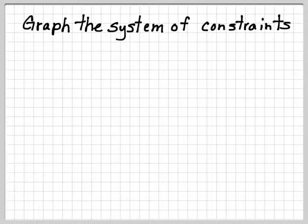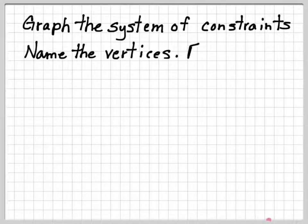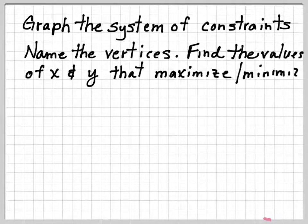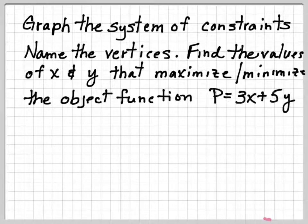Okay, we're going to start off with graph the system of constraints and name the vertices and find the values of x and y that maximize or minimize the objective function. And in this case, it's going to be P equals 3x plus 5y. That might be a lot to swallow.